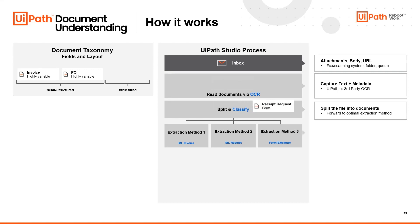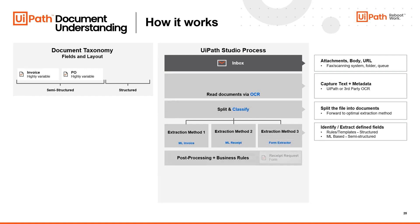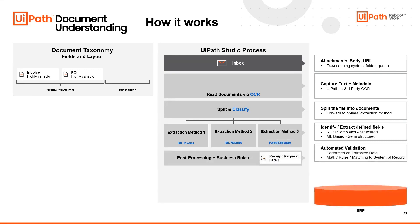In this case, our form didn't need to be split. It turns out it is a form, so it goes to our form-based extractor. The form-based extractor is a very simple template-based approach to extracting data from documents. Once we have extracted the data from the fields we've defined, we send that data — no longer a document, but the actual data that's important to us — to post-processing and business rules.